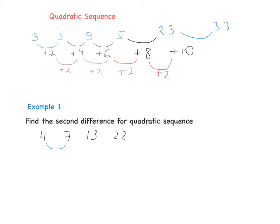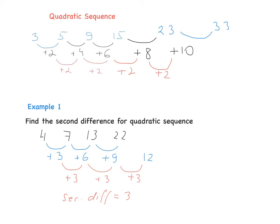The difference between 4 and 7 is plus 3, between 7 and 13 is plus 6, and between 13 and 22 is plus 9. Now the second difference: between 3 and 6 is plus 3, and between 6 and 9 is plus 3. So the second difference is plus 3. If asked for the next term, add 3 to the first difference: 9 plus 3 is 12, and 22 plus 12 is 34.